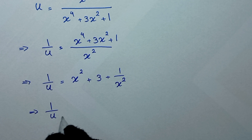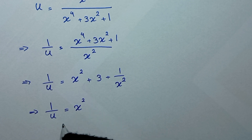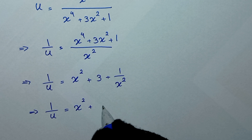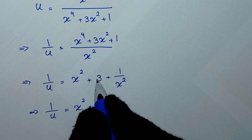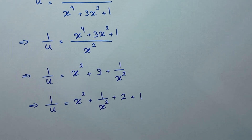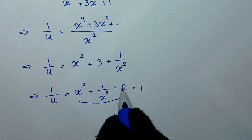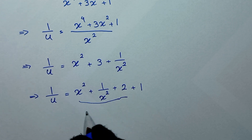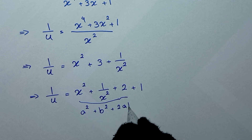So 1 over u is equal to x squared plus 1 over x squared plus 3. We can write 3 as 2 plus 1. The expression x squared plus 2 plus 1 over x squared is in the form a squared plus 2ab plus b squared.